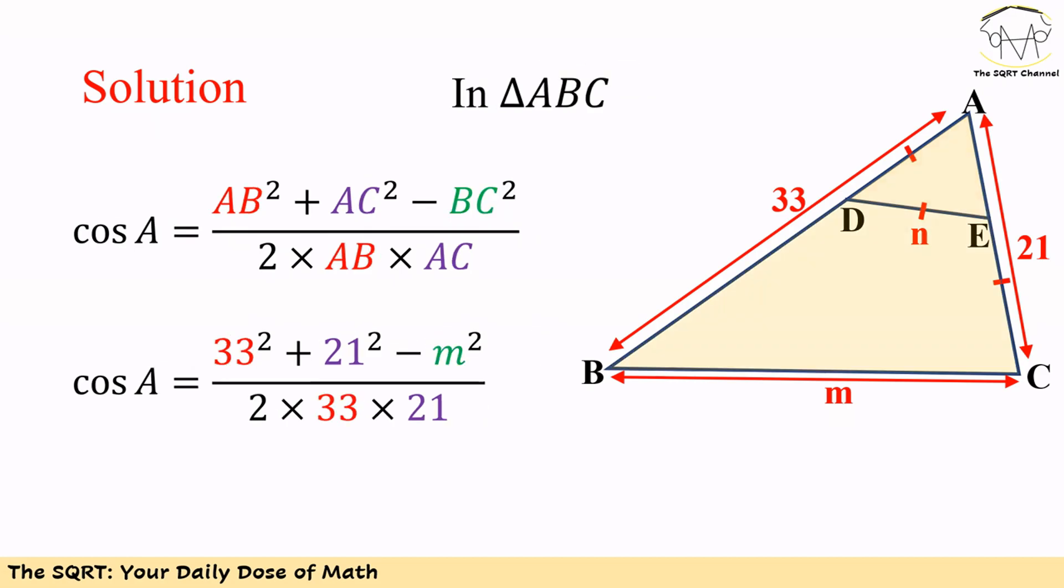We are going to use the same approach, but this time for triangle ABC. We have angle A here as well, so we can write cosine of A based on AB, AC, and BC. Basically, cosine of A is equal to AB² plus AC² minus BC² over 2 times AB times AC.